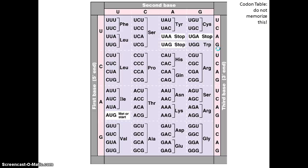The codon chart shows all 64 codons. Some amino acids have redundant codons — for example, leucine has CUU, CUC, CUA, and CUG. To read the mRNA codon chart, you identify the first base, second base, and third base. For example, AUG: find A, then U, then G — AUG codes for methionine (Met). The codons are based on the mRNA sequence.